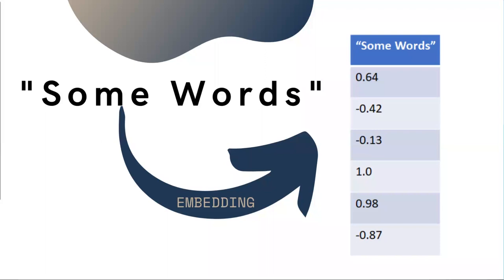Embeddings are a way to turn normally discrete objects into vectors of numbers. The most common use case is words — words are not numbers, so having a way to turn words into numbers is useful because you can feed those numbers into your model and that helps prediction. There's plenty of other uses apart from words — anything that's a discrete object you can probably turn into an embedding somehow if you're crafty enough.